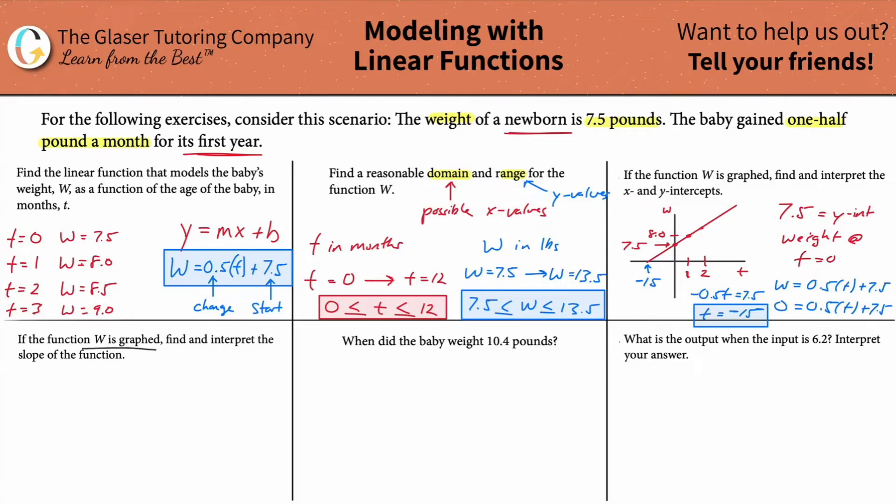So if the function W is graphed, find and interpret the slope. So here I'm just going to copy this thing because we're going to be looking at the same graph. So the slope here, remember, I used this equation W equals 0.5T plus 7.5. The slope here, we already basically interpreted it. We interpreted it earlier. So this represents the change in weight per month. In other words, the change in the weight per the change in time, because the month is on the bottom, weight is on the top. This is the same thing as change in Y over change in X. Good. That's what slope means. It just represents the change in weight per month. That's it.